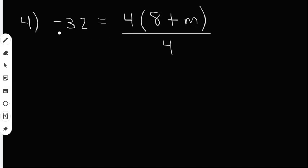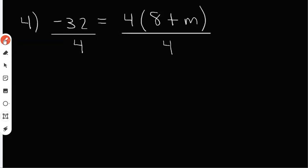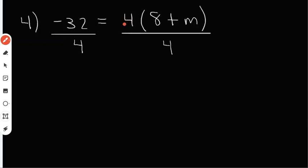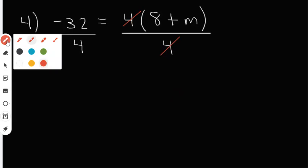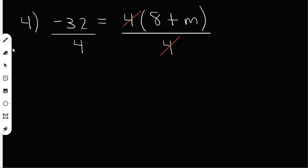Yeah, you should get negative eight. So I'm dividing both sides by four. What that's going to do is it's going to cause the fours over here to cancel out. And negative 32 divided by four, that's going to be negative eight. And the only thing left on this side is going to be the 8 plus N.